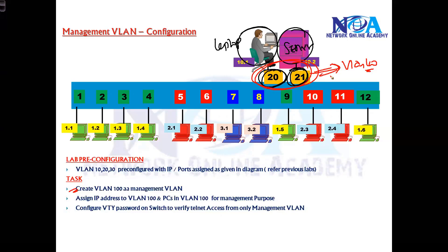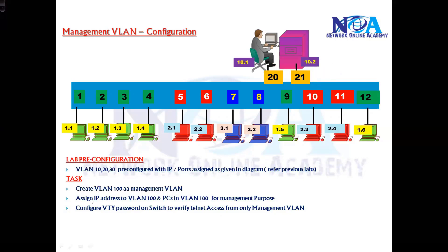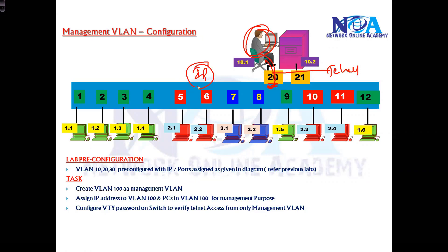For management, I'll be creating VLAN 100 and assigning an IP address to it, because to access the switch remotely via telnet or SSH you need an IP address on the switch. I'll be using the 192.168.10 subnet for management purposes, configuring the VTY password, and verifying telnet access from a management PC.